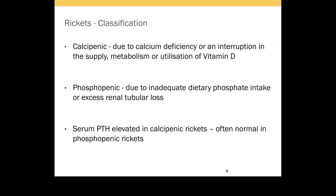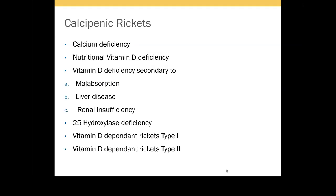When it comes to serum parathyroid hormone levels, the easiest way to differentiate the two types of rickets is by measuring parathyroid hormone, which is elevated in calcipenic rickets and normal in phosphopenic rickets.